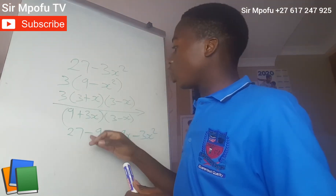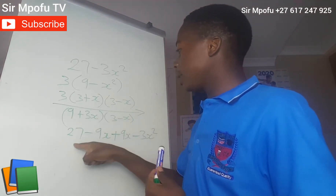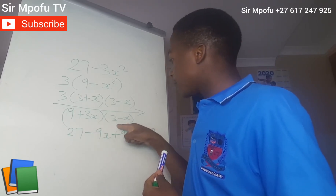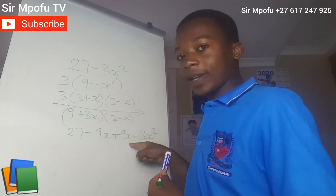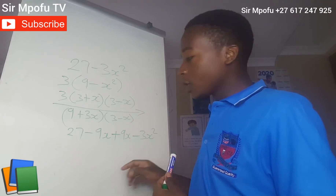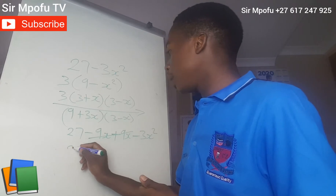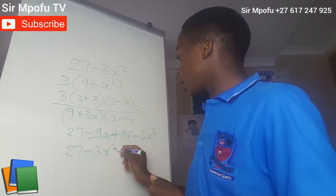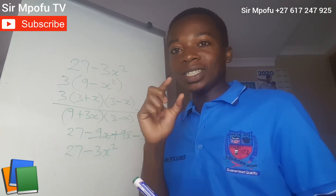As I told you, this 9 multiplied the full bracket and this positive 3X multiplied the full bracket. So 9 times 3 is 27; 9 times negative X is negative 9X; positive 3X times 3 is positive 9X; positive 3X times negative X is negative 3X squared. So minus 9X plus 9X cancels out, and we remain with 27 minus 3X squared. Proved — our answer is 100% correct.